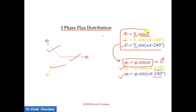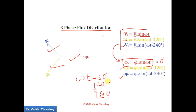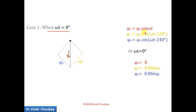Now let us do some analysis. We take the ωt factor — this is a time-dependent factor that changes with time. We will take a few instances, starting at ωt = 0°, then increasing at intervals of 60°: so 60°, 120°, 180°, and so on. First at ωt = 0°: φR = φm·sin(ωt), φY = φm·sin(ωt − 120°), and φB = φm·sin(ωt − 240°). Substituting 0°, we get φR = 0, φY = −0.866φm, and φB = +0.866φm.